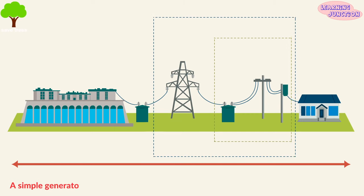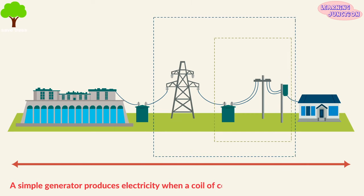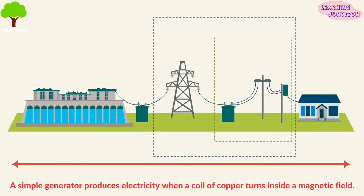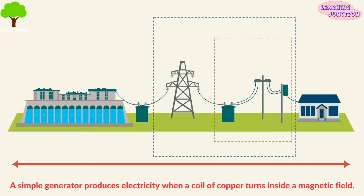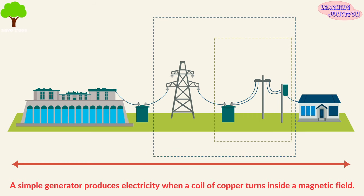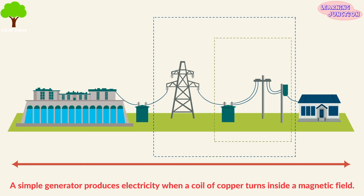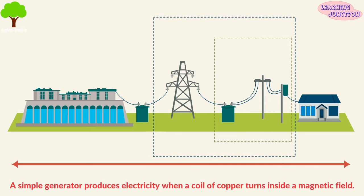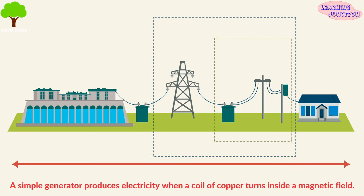A simple generator produces electricity when a coil of copper turns inside a magnetic field. In a power plant, electromagnets spinning inside many coils of copper wire generate vast quantities of electrical current.